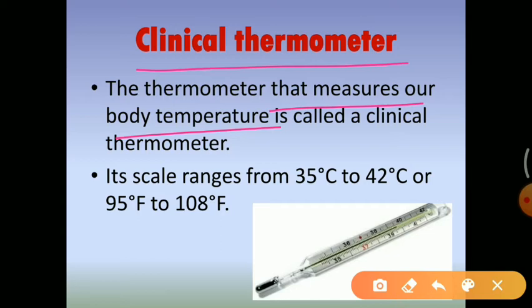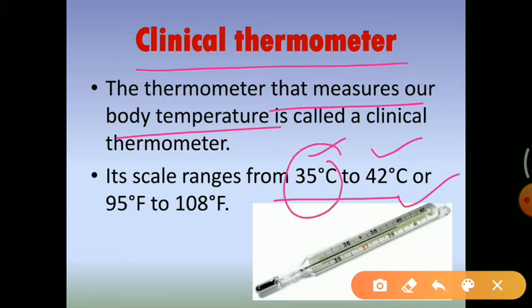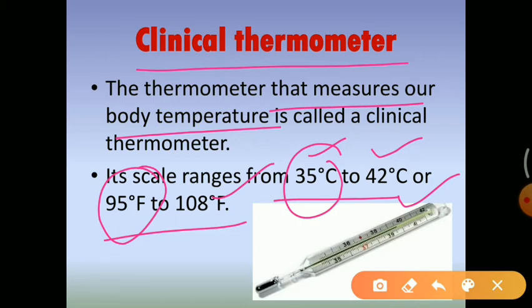Its range is from 35 degrees Celsius to 42 degrees Celsius, meaning it can measure temperatures from 35°C up to 42°C. In Fahrenheit, the range starts from 95 degrees Fahrenheit to 108 degrees Fahrenheit. Fahrenheit and Celsius are both different scales of measuring temperature. Whenever a doctor tells you your body temperature is 99 or 100, they are telling you in degrees Fahrenheit, not in degrees Celsius.